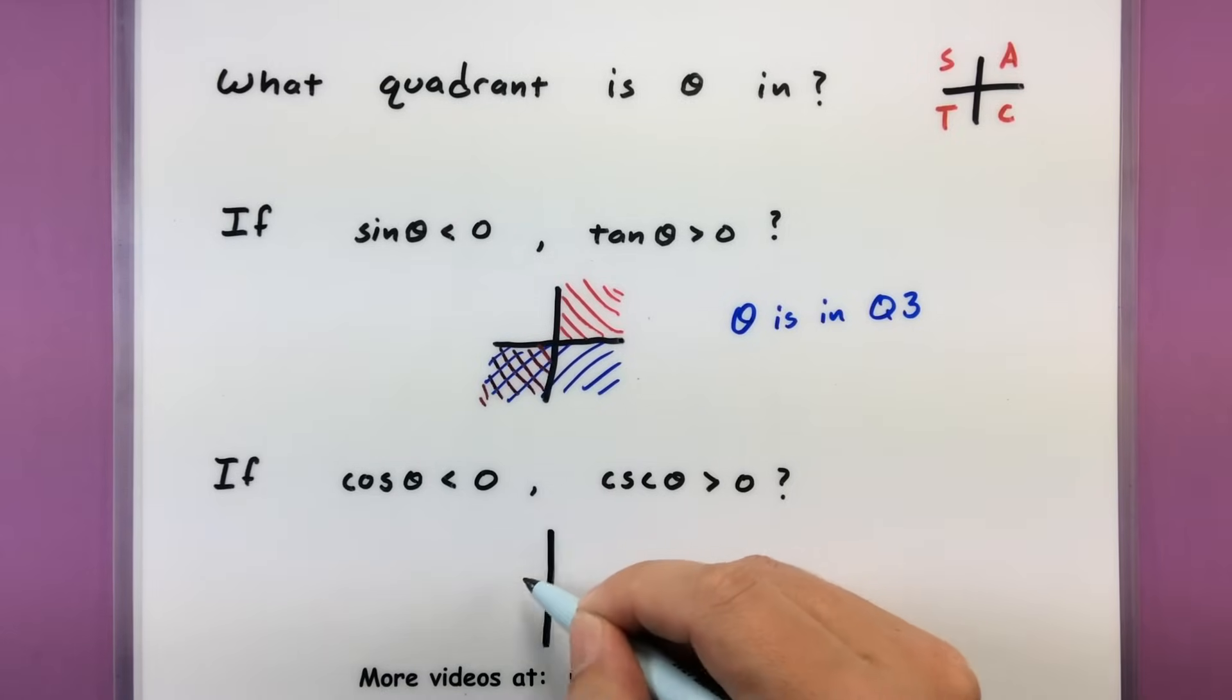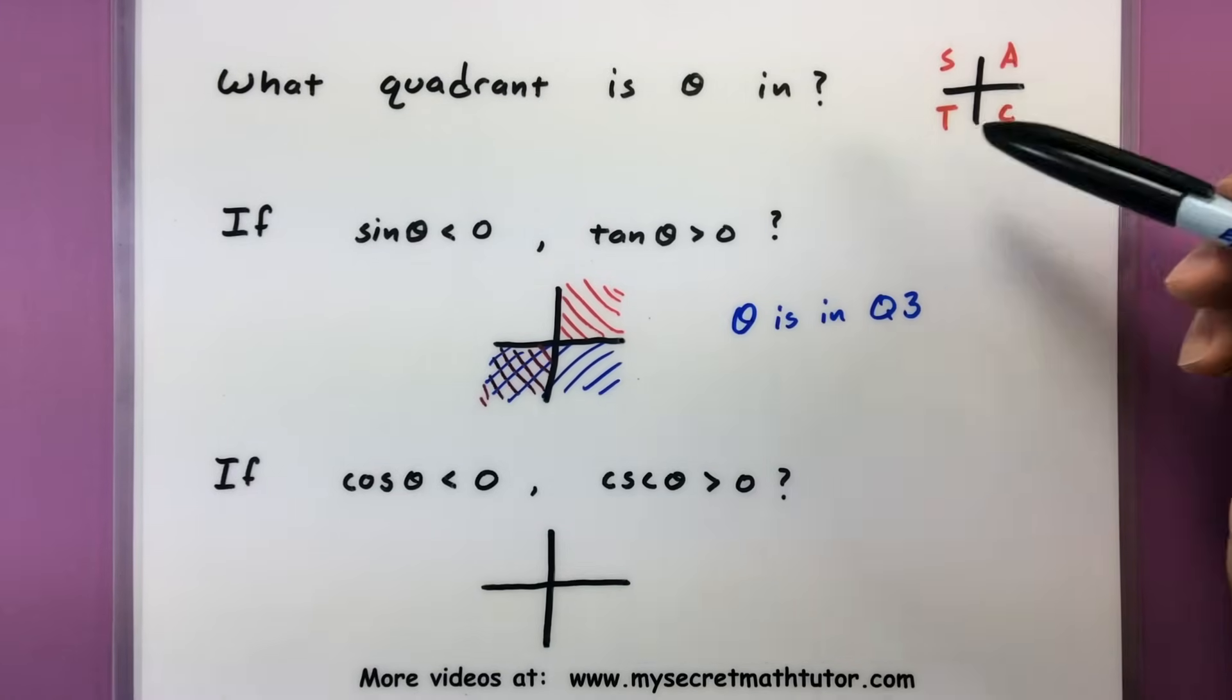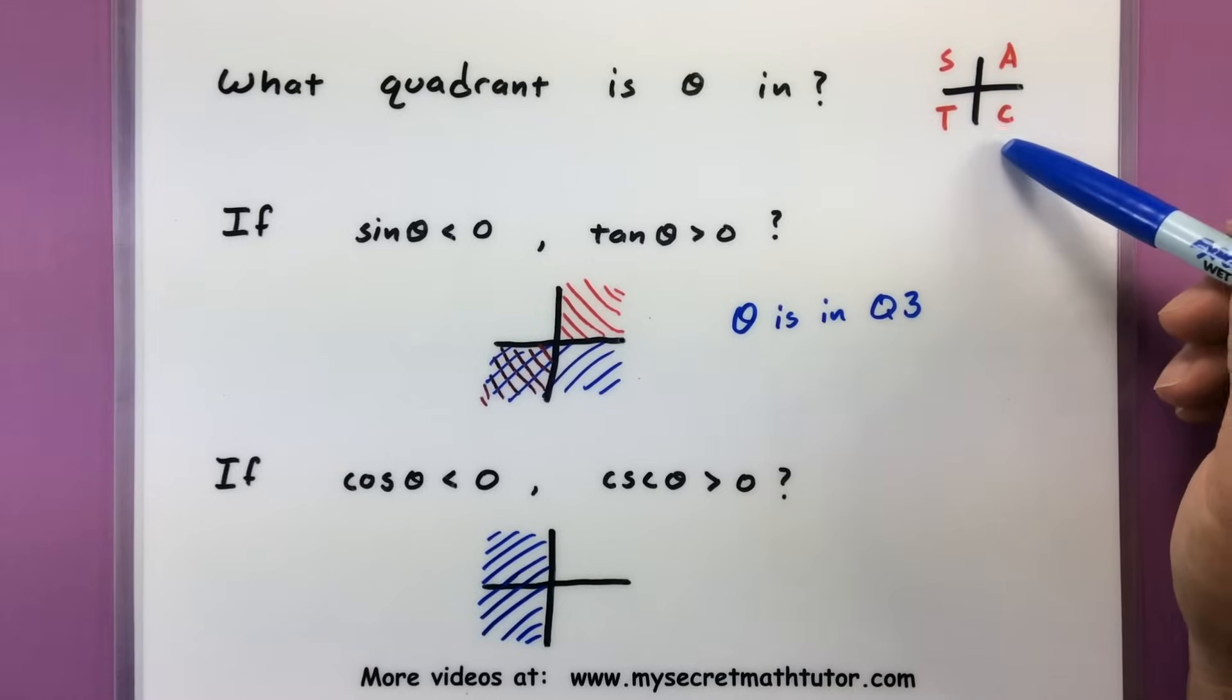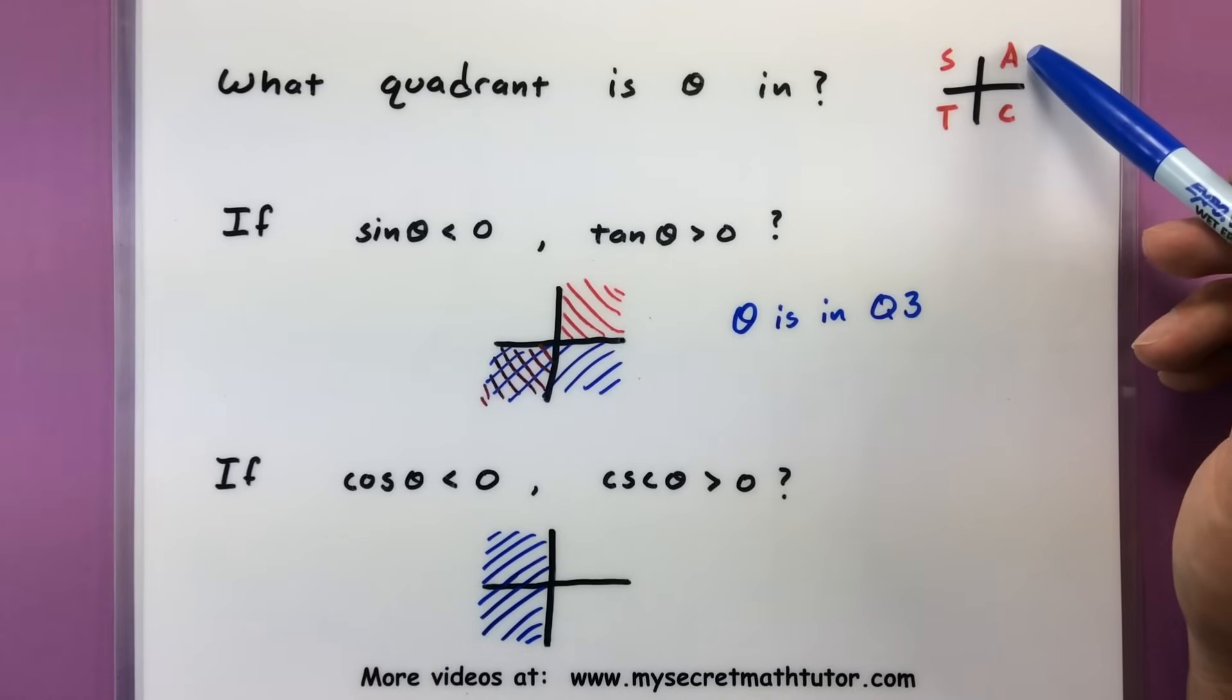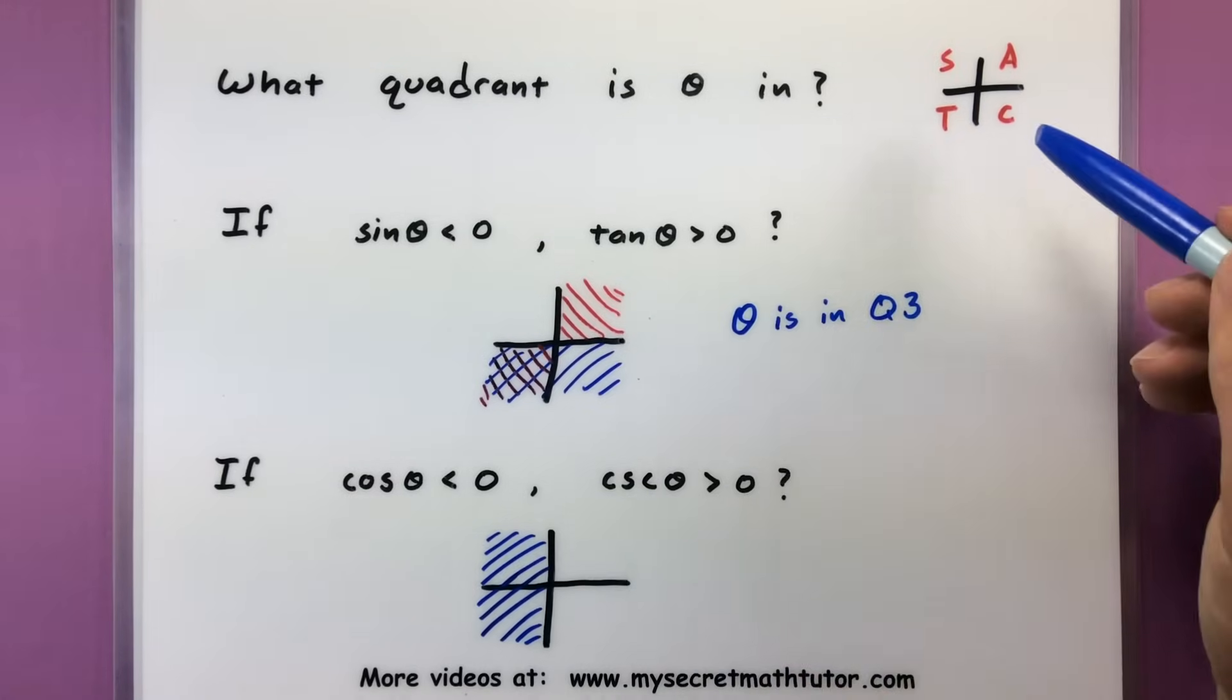So this time, cosine is negative and cosecant is positive. Cosine is negative, so that rules out those two. I need where it's negative, so I know it has to be over on this side, somewhere over here. Cosecant greater than zero. Now I have to be careful. This stands for all trigonometric functions - sine, tangent, and cosine. Where's cosecant?